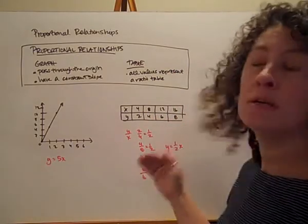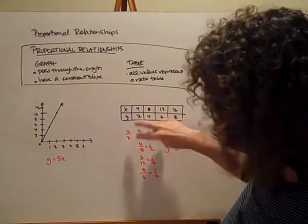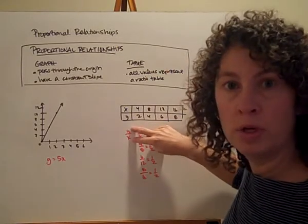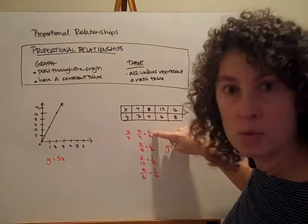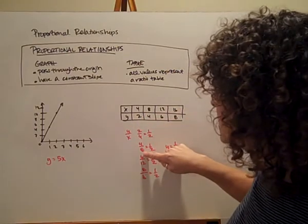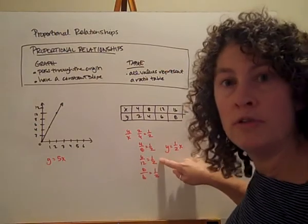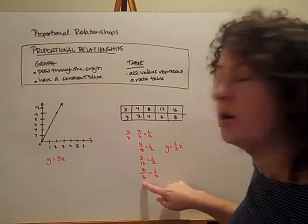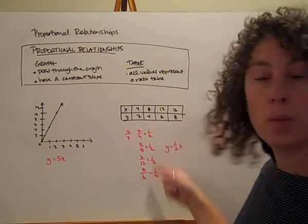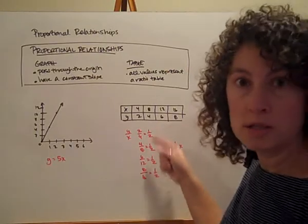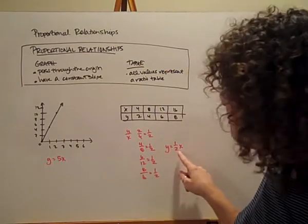From a table, I still want to look at how is y related to x. So I'm still taking my y value and putting it over my x value. I'm going to take 2 over 4 — that's 1/2. My 4 over 8 — that's also 1/2. My 6 over 12 — also 1/2. My 8 over 16 — that's also 1/2. So here is my slope, my constant of proportionality: 1/2. That's going to go where my slope is: y equals 1/2 x.